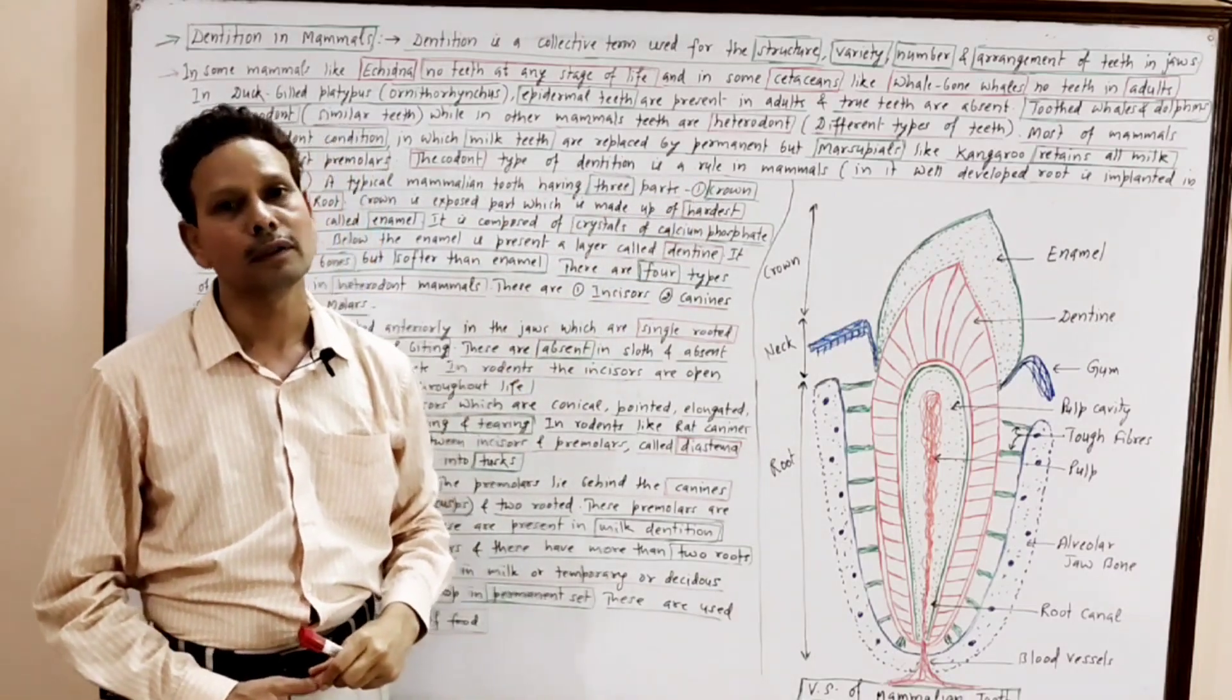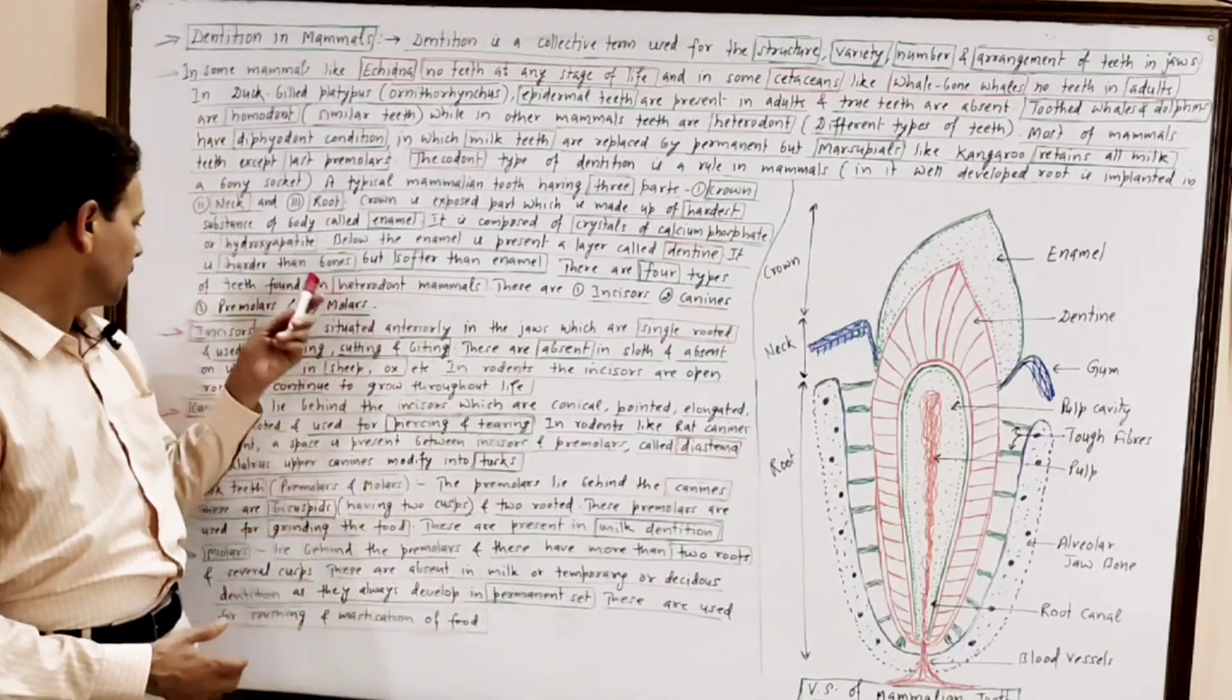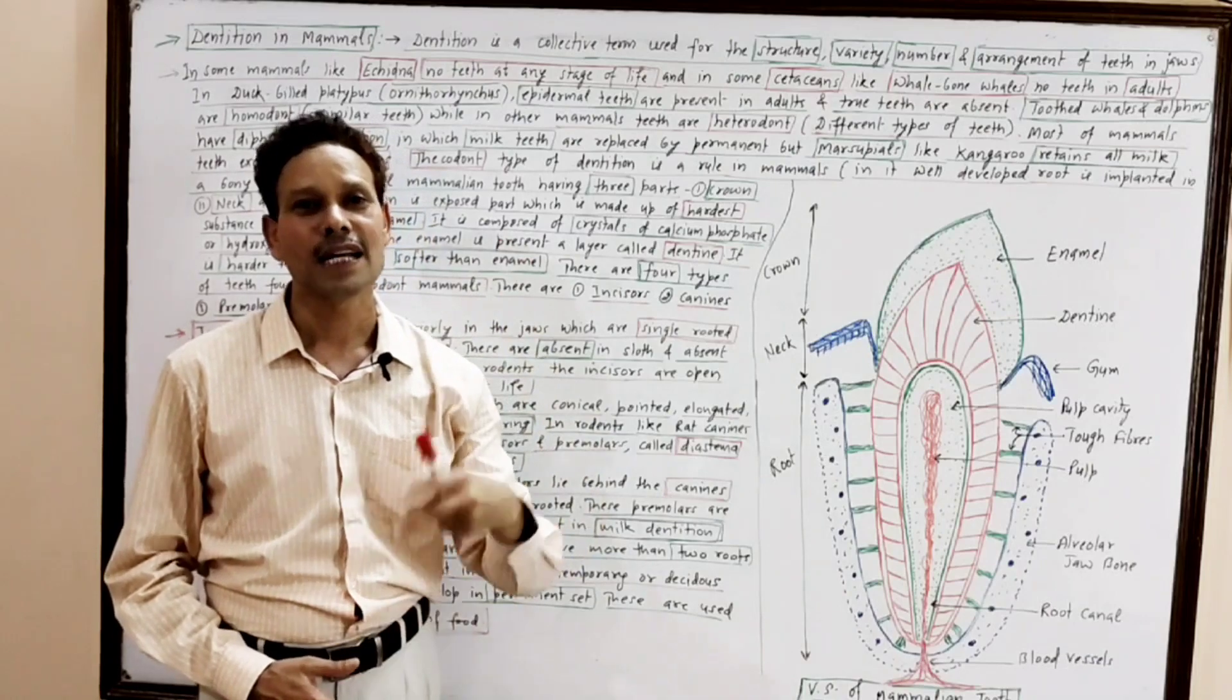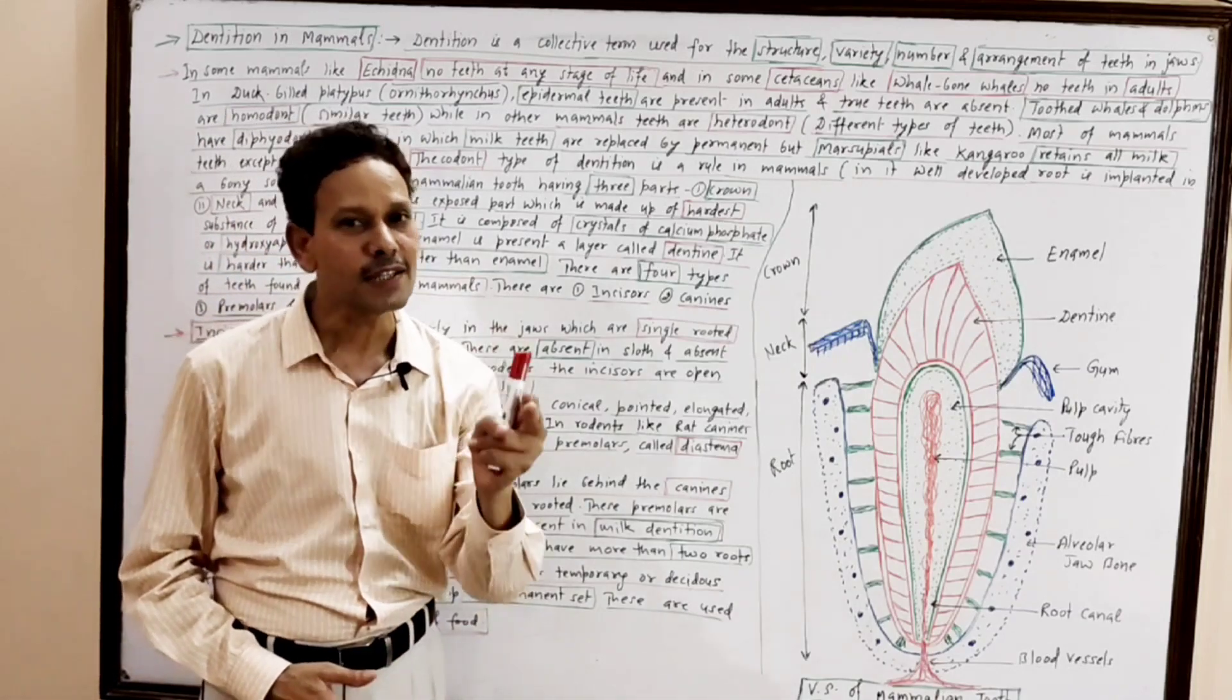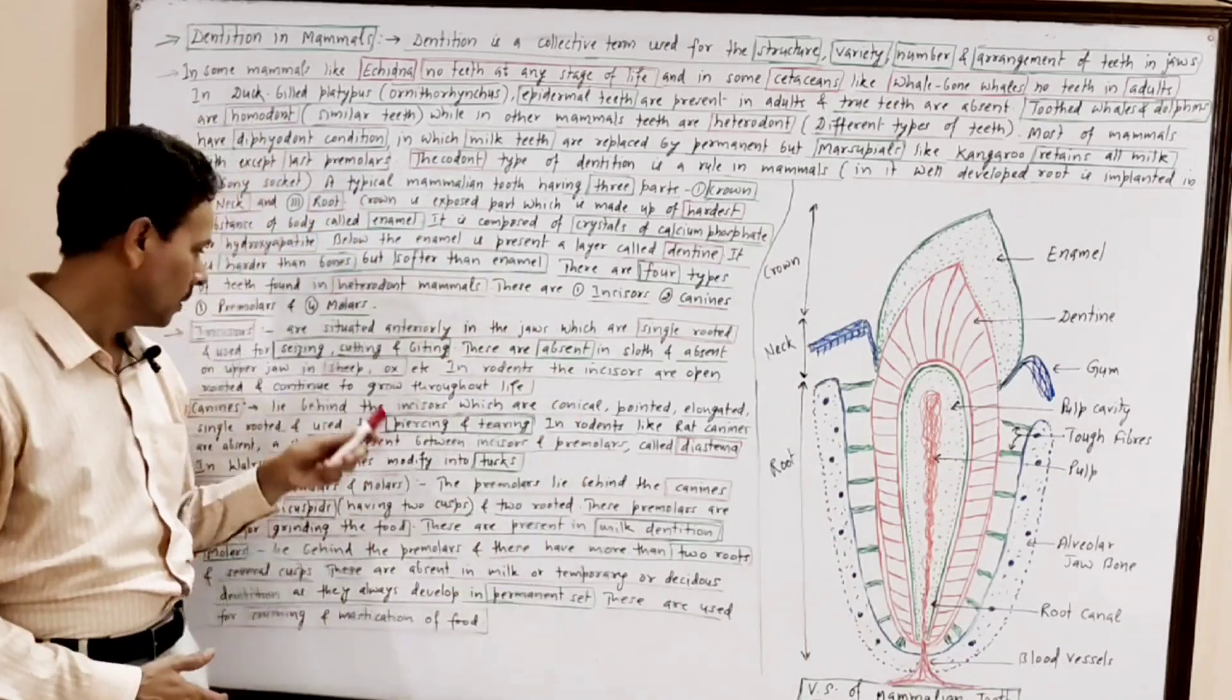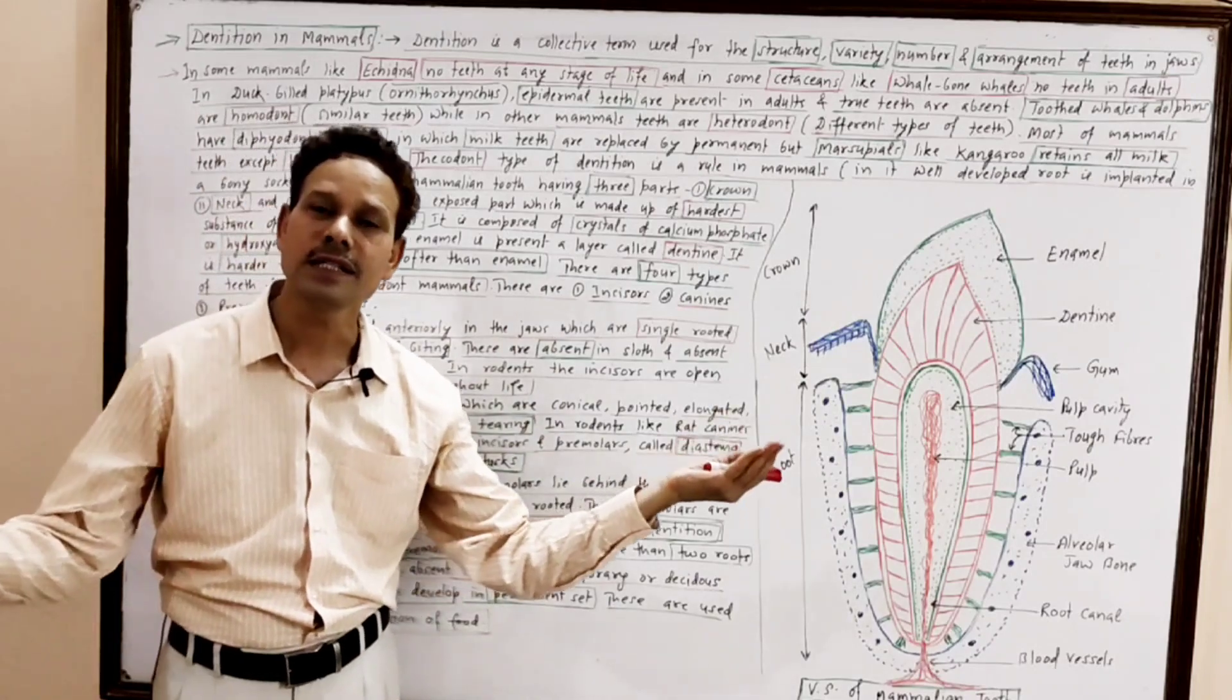In heterodont dentition, teeth are of four types: incisors, canines, premolars, and molars. Incisors are situated in the anterior region of a jaw. Incisors, as name indicates, are involved in cutting, biting, and seizing of food particles. Incisors are single rooted, only one root is there. And these are monocuspid, only one cusp is there. In case of sloth, the incisors are absent.